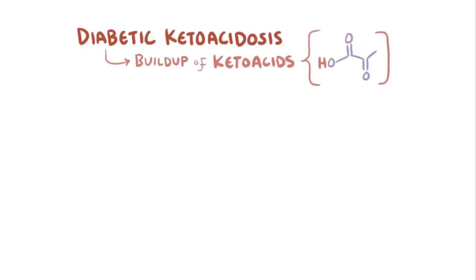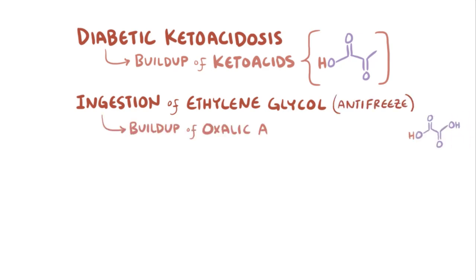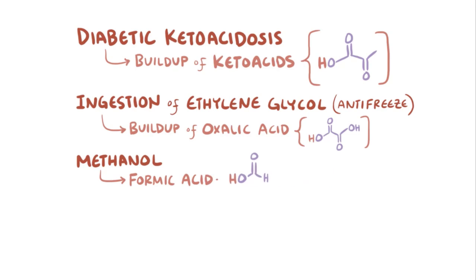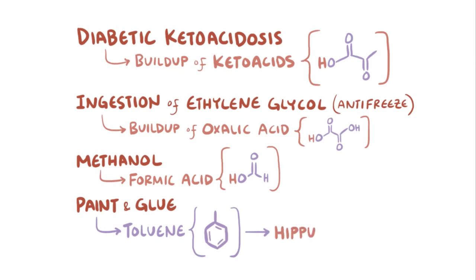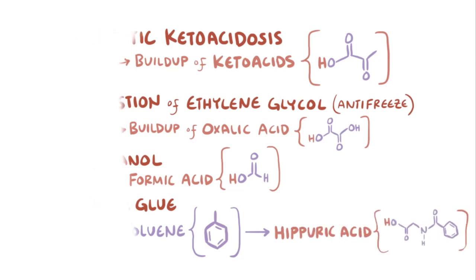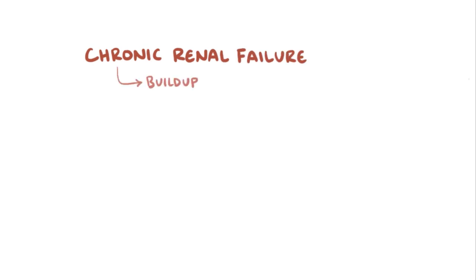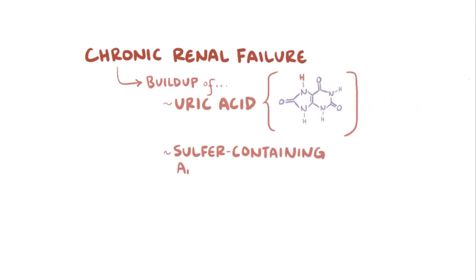Another situation might be diabetic ketoacidosis, which leads to a buildup of keto acids, which are also molecules that carry along a proton. Yet another situation might be after accidental ingestion of ethylene glycol, which is a common antifreeze. This can cause oxalic acid to build up. Also, a metabolite of methanol, which is a highly toxic alcohol, is formic acid. Paint or glue has a molecule called toluene, which leads to a buildup of hippuric acid. One more cause could be from chronic renal failure, where uric acid or sulfur-containing amino acids build up, because the kidneys simply can't get rid of them.